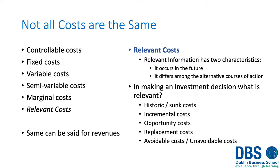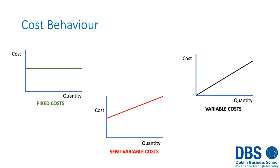The key issue in deciding whether costs have an impact on the decision is whether they would change based on the decision being made. For example, if costs have already been spent and the decision whether or not to take a project will not affect those costs in any way, we'll probably ignore those costs because there's no point worrying about them — they're not going to change. There are three basic types of costs.